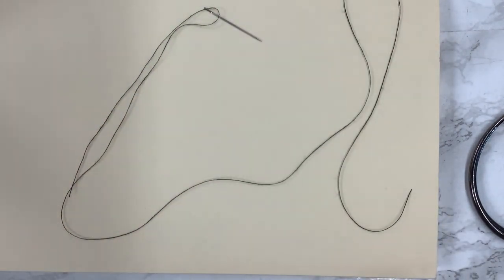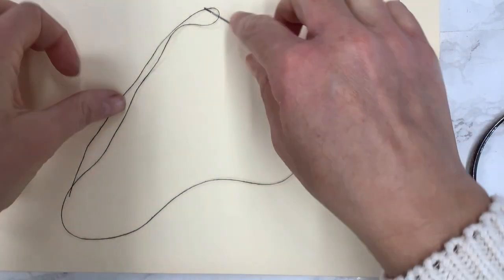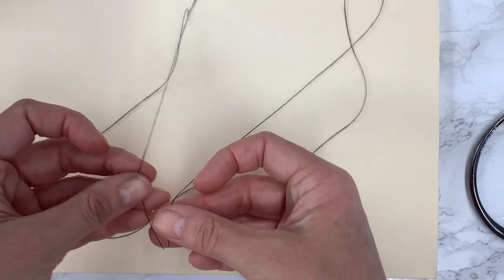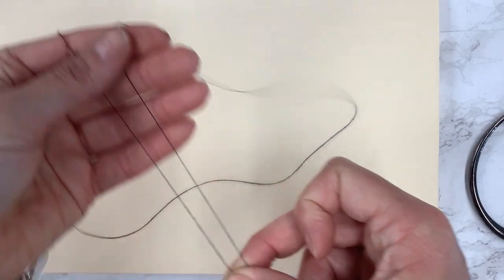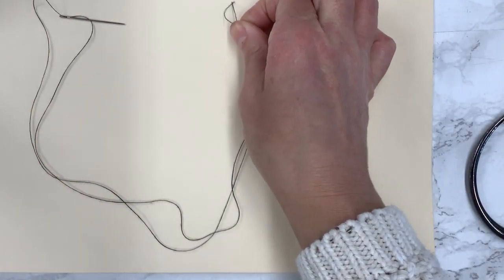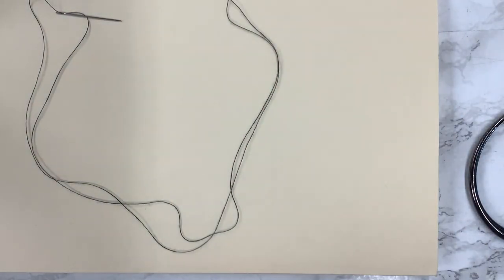Of course before I start sewing I'm going to need a knot at the other end. If I don't put a knot at the other end, the thread's just going to come right through. So I know that many people were taught when they were younger to sew like this: to fold the thread in half and then you would tie these two ends to create a knot. Do not do that.